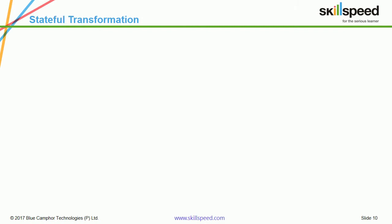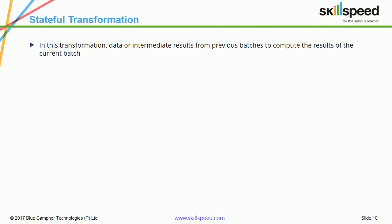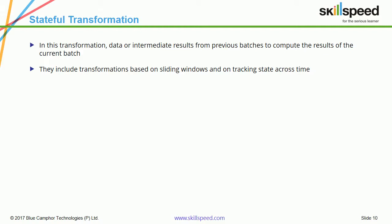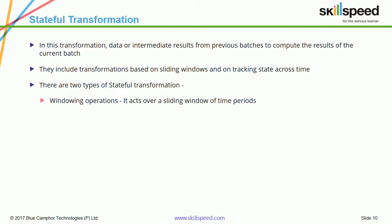Now let's look at stateful transformations. In these transformations, the results of one batch of data processing depend on the previous batch of data processing. They include transformations based on sliding windows and on tracking states across time. There are two types of stateful transformations: windowing operations and updateStateByKey.